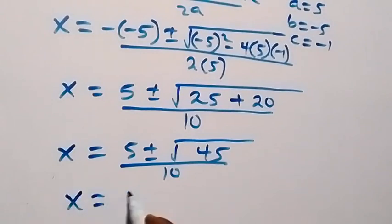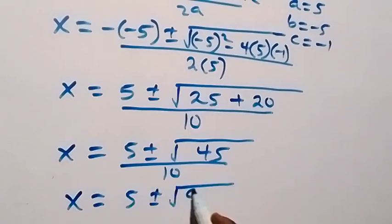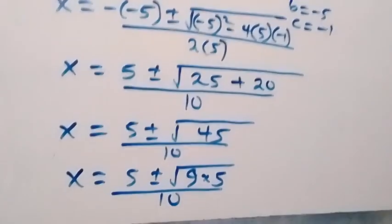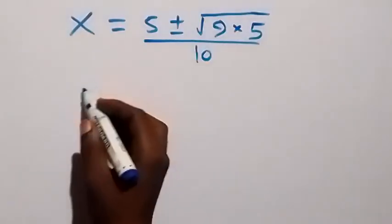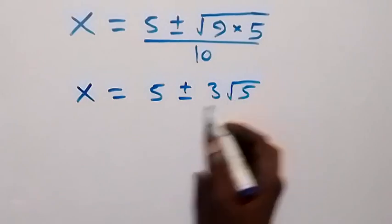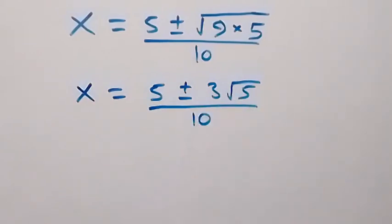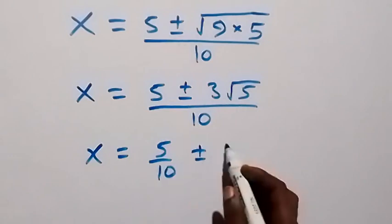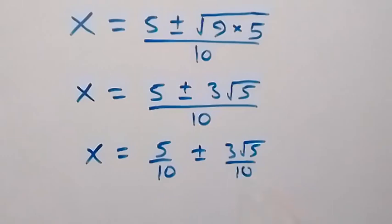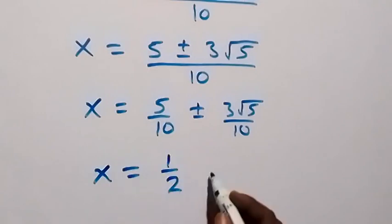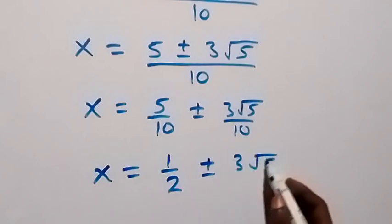We can write the square root of 45 as square root of 9 times 5. The root of 9 we can separate out, giving 3 root 5. So x equals to 5 over 10 plus or minus 3 root 5 over 10, which is also x equals to 1 over 2 plus or minus 3 root 5 over 10.